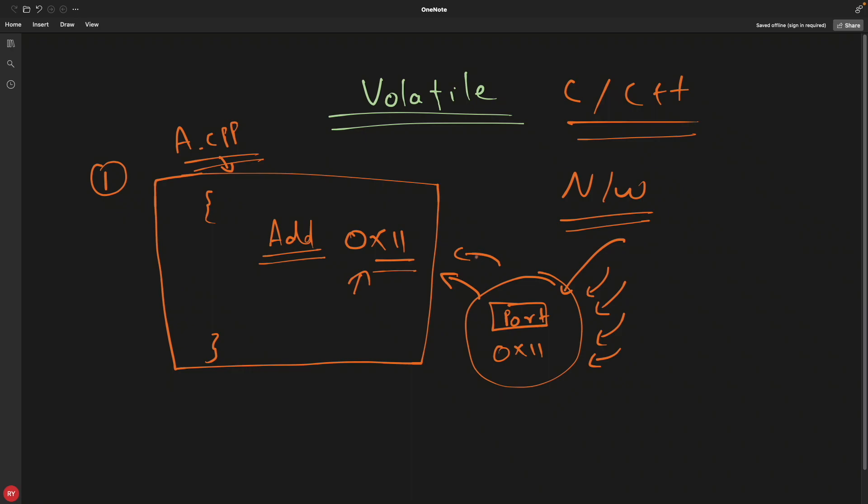Then there is a very big issue in reading this address. Listen to this very carefully: if you are going to read this address and your compiler optimization was actually on, in that case you will not be reading the actual value. You are going to read the older value. So let's say few changes were made like 1, 2, 3, and 4. Maybe you will be seeing this value or this value but not this value. Why? Because compiler optimization is on.